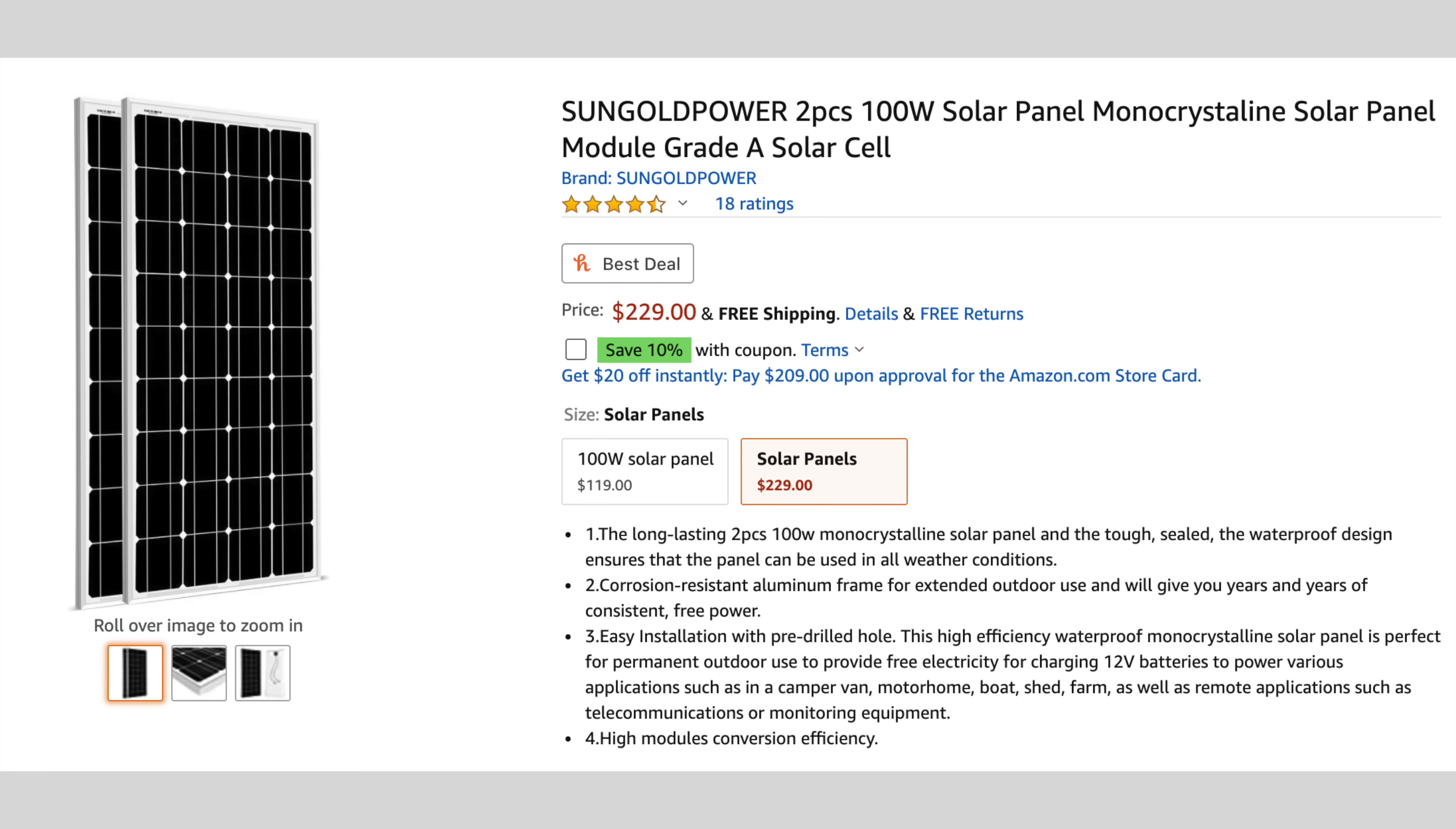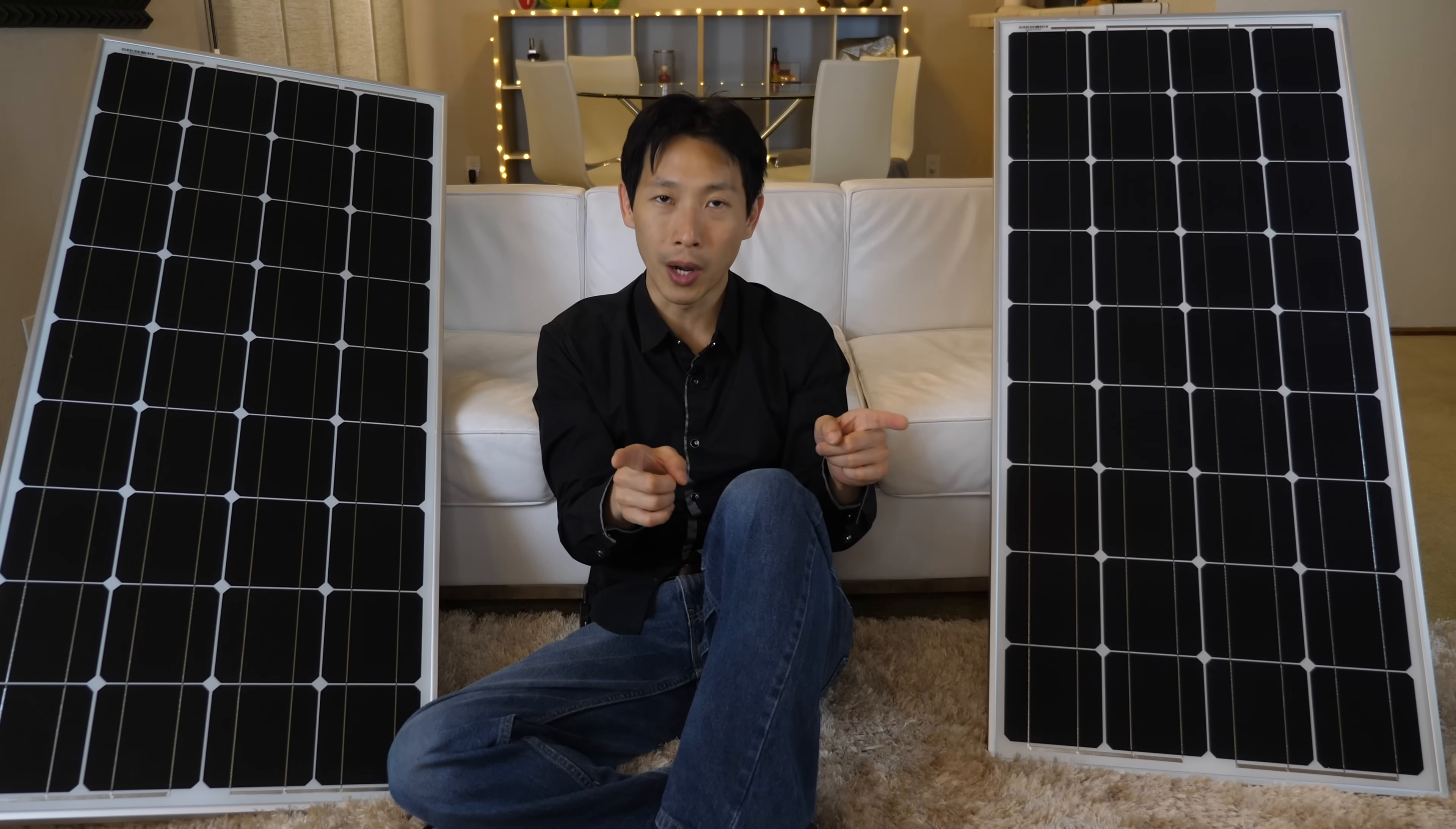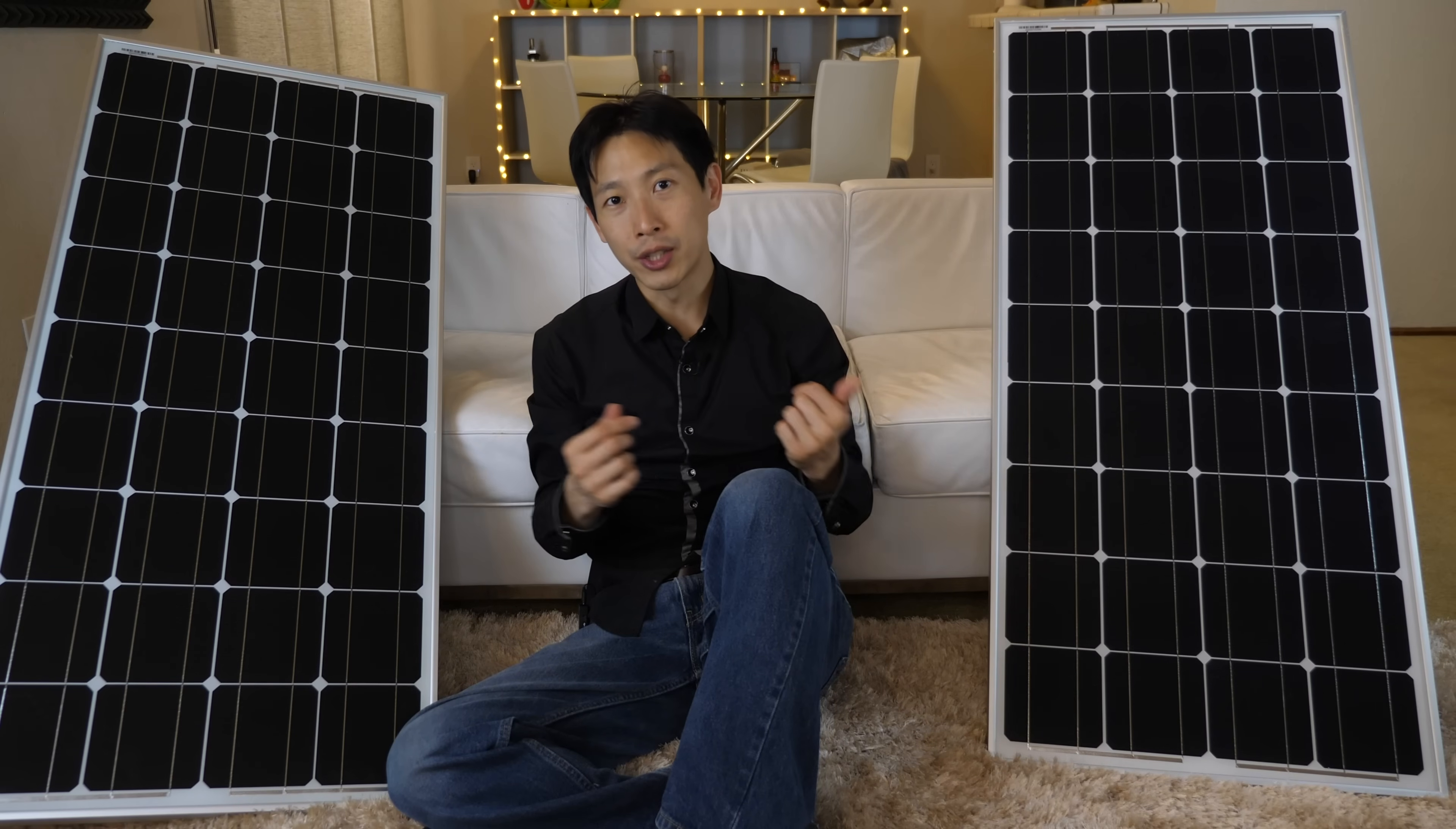This video is brought to you by Sun Gold Power. They supplied me with two more solar panels so that I can add on to my grid tie system. As you guys know, right now, my capacity is two 100 watt panels. So adding these two is another two 100 watt panels. In total, that's 400 watts.